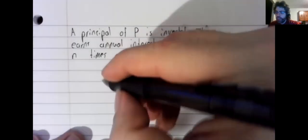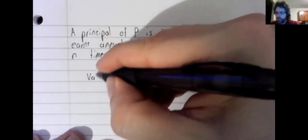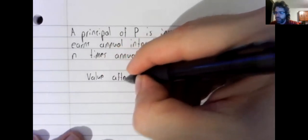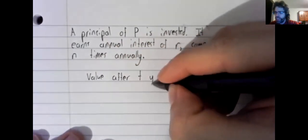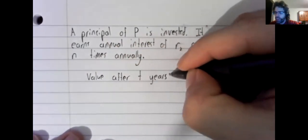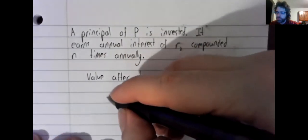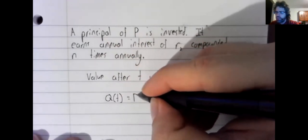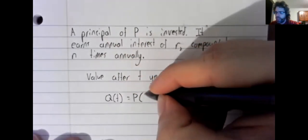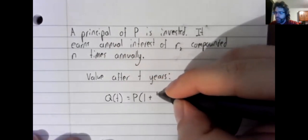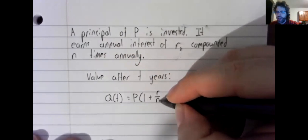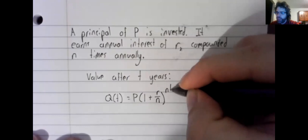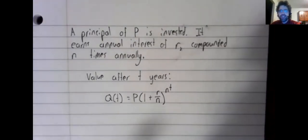Then the value of this investment after T years is Q(T) equals the principal times 1 plus R divided by N to the power of NT.